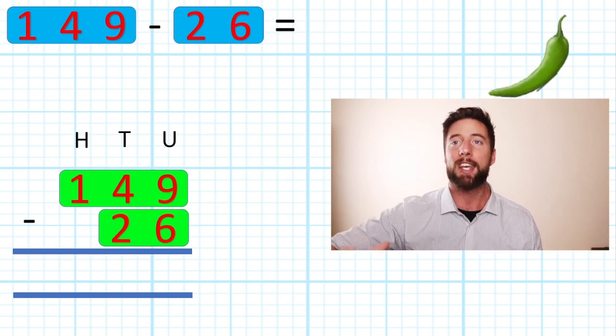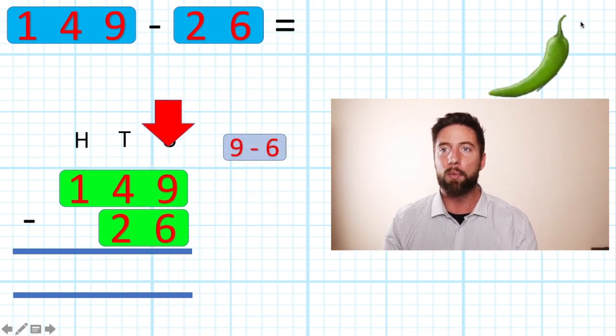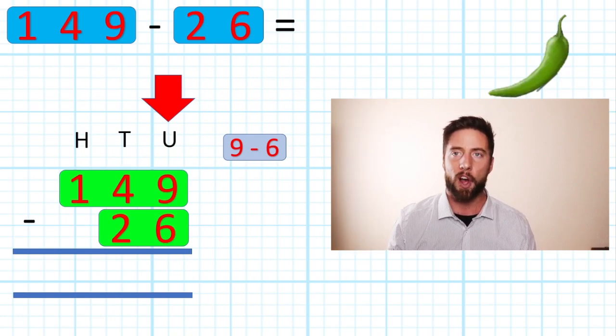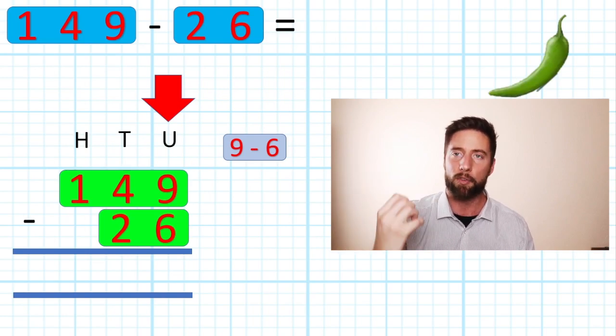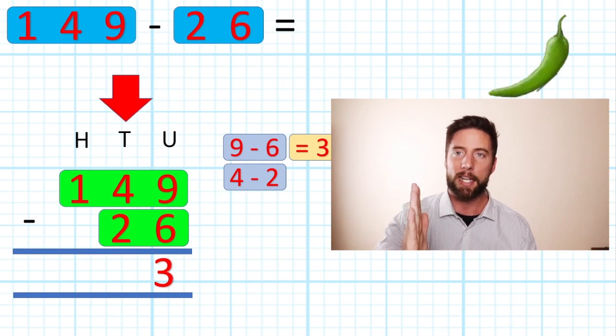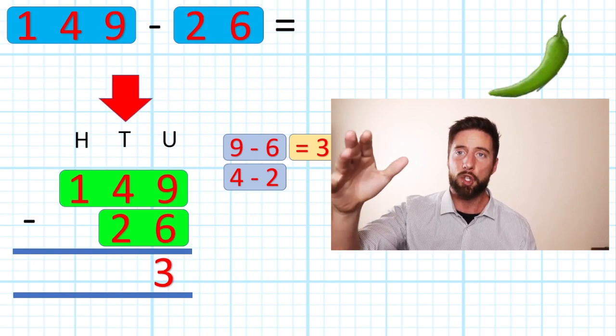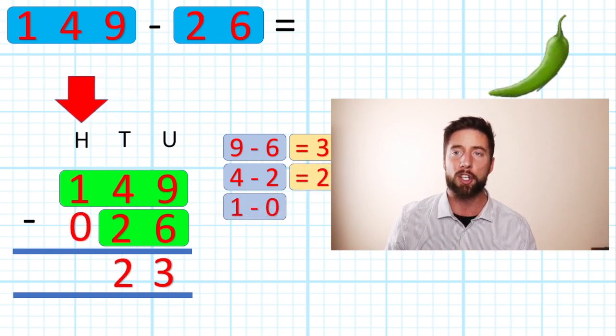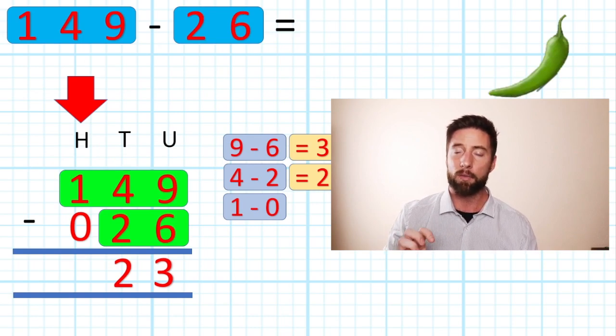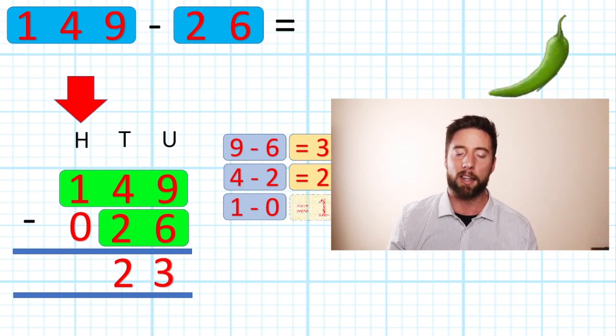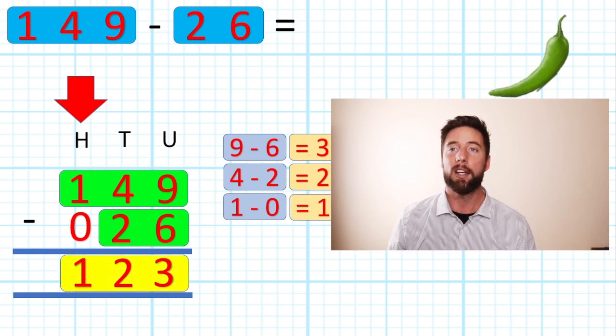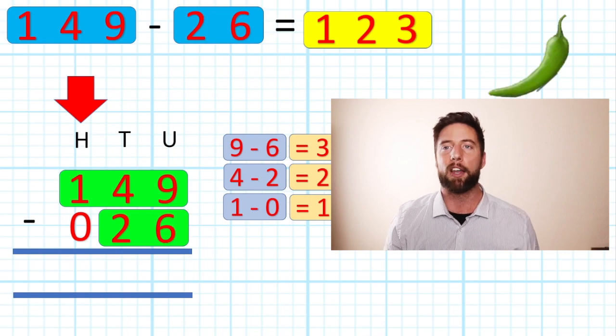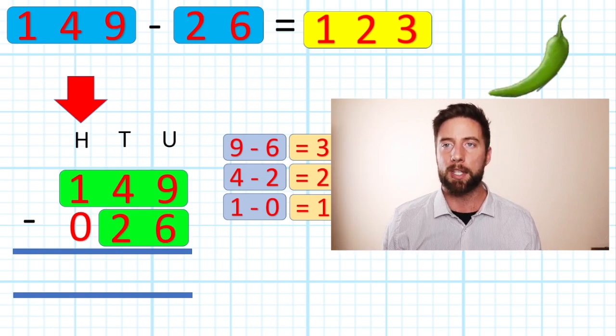Where are we going to begin? We are always starting with our smallest value. In this case we have units as our smallest value, so I'm going to start there. Nine subtract six gives me three, put my three in my answer row. Move across to our tens column: four subtract two gives me two. Move across last time, look at my hundreds column: I've got 100 subtract nothing, so one subtract nothing is one. My answer: 123. 149 subtract 26 is 123.